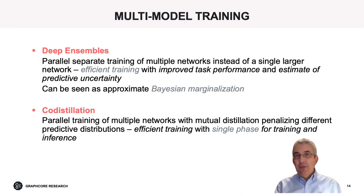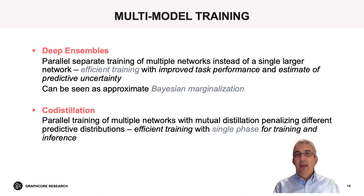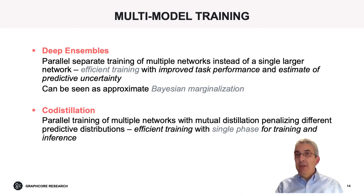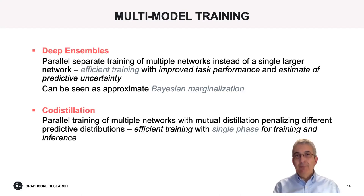However, this exchange of information has limited overhead and is particularly tolerant of being performed only at very long periods, as well as being tolerant towards staleness. The advantage of co-distillation over conventional deep ensembles is that it uses a single training phase, avoiding the need for a first phase of training the ensemble models followed by a second phase of combining their predictions. In co-distillation, the single phase already delivers an ensemble of models that have been trained to produce consistent predictions.